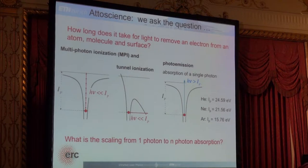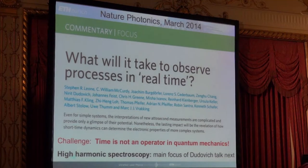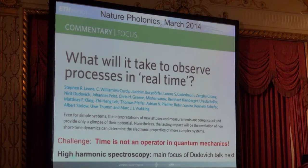There is also single photon absorption when the photon energy becomes larger than the ionization potential. For typical atoms we look at — helium, neon, argon — this photon energy needs to be in the VUV, which we can obtain today very nicely. When you measure the time there must be a scaling between the one-photon to the n-photon absorption process, and the theory there is also not very clear — when you ask different theoreticians, you get different answers. We had just last year a very nice workshop where we collected a whole bunch of people in attosecond science and asked: what will it take to observe processes in real time? The challenge with time measurements in quantum mechanics is that time is not an operator, so you have to be very careful about what your observables are and how you deduct the time out of these measurements.